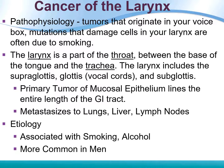Cancer of the larynx occurs when a tumor originates in the voice box. Mutations that damage laryngeal cells are often due to smoking. The larynx is part of the throat between the base of the tongue and the trachea, and includes the supraglottis, the glottis or vocal cords, and the subglottis. A primary tumor of the mucosal epithelium can contribute to laryngeal cancer, and it can metastasize to the lungs, liver, and lymph nodes.